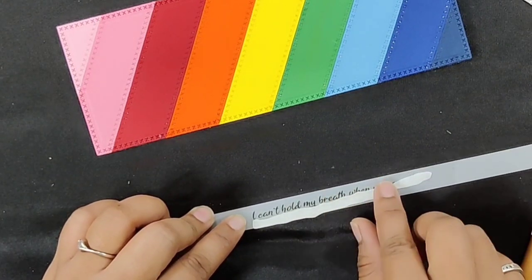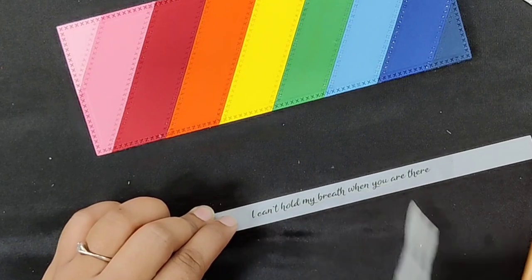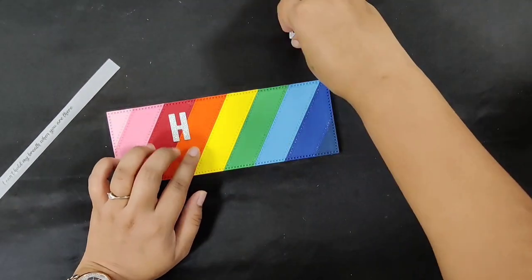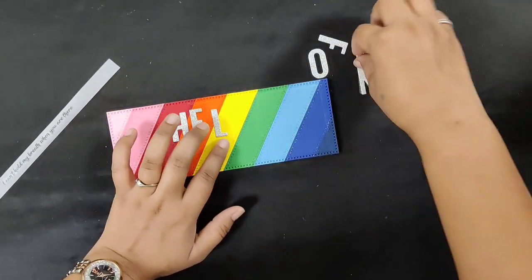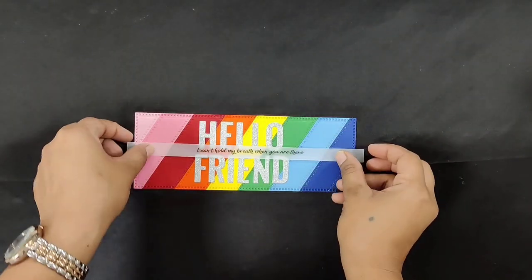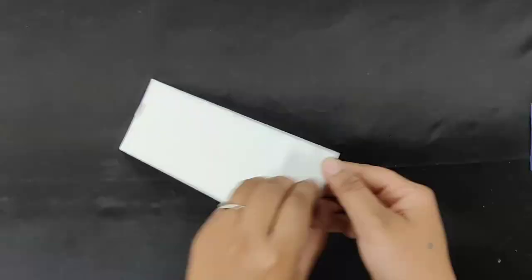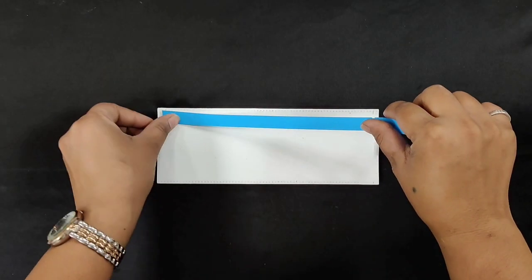Take the word die cuts 'hello friend' and adhere them on the card using liquid glue. Add the sentiment strip in the center. Add foam adhesive on the back of this panel and attach it to the card base.